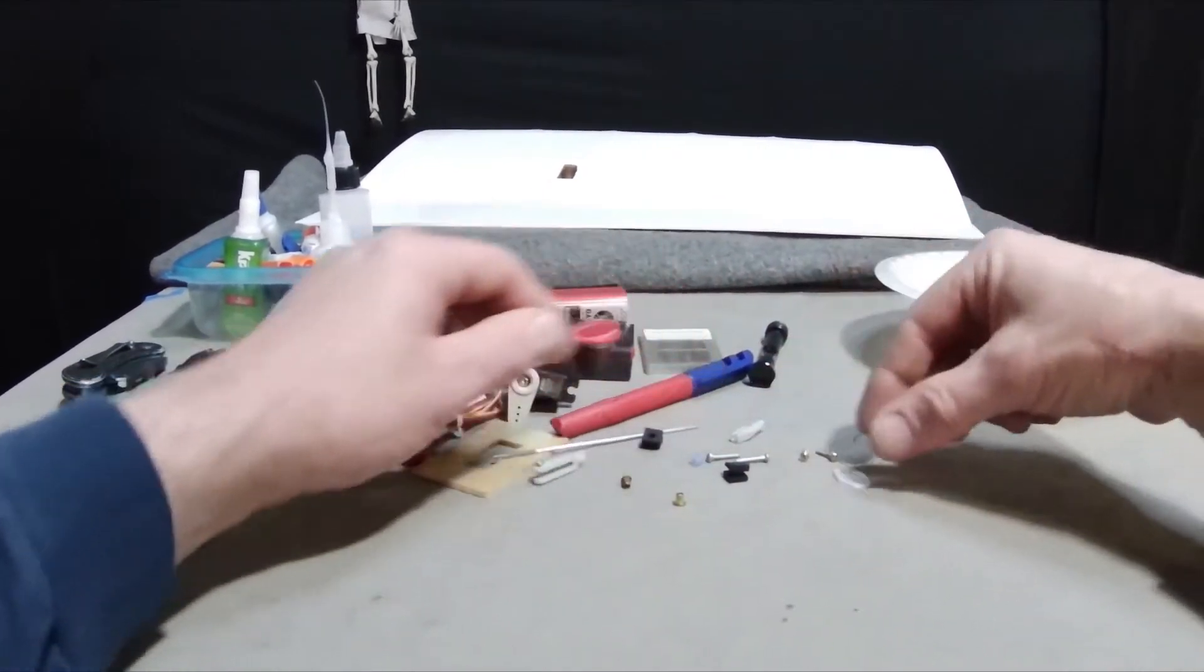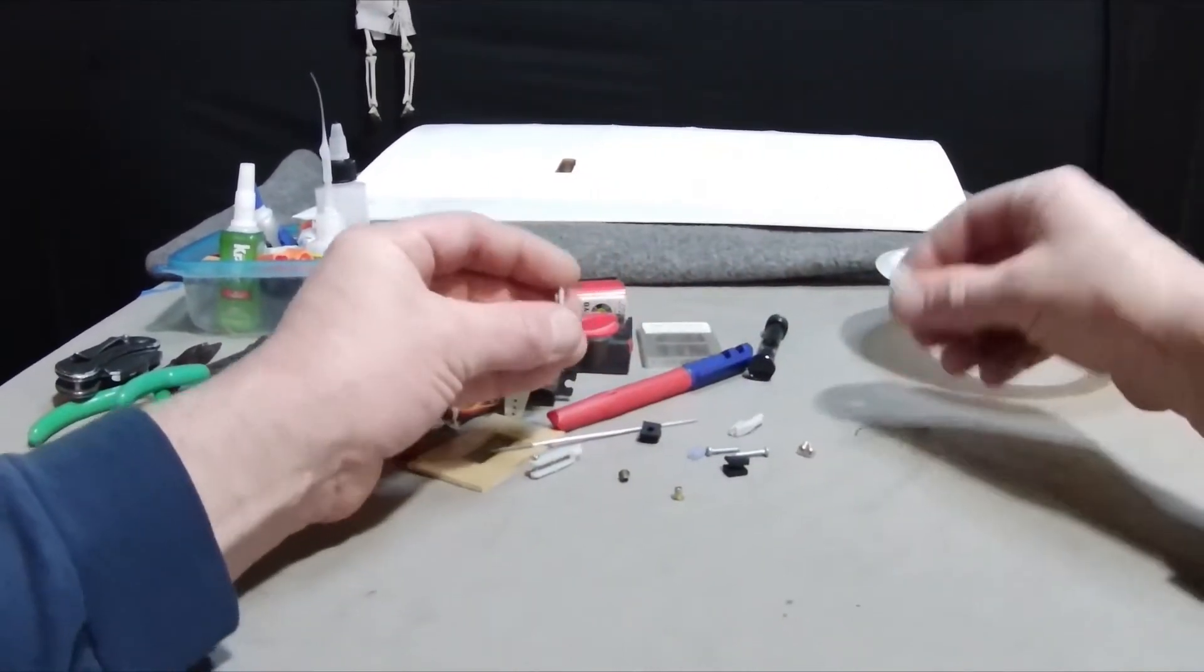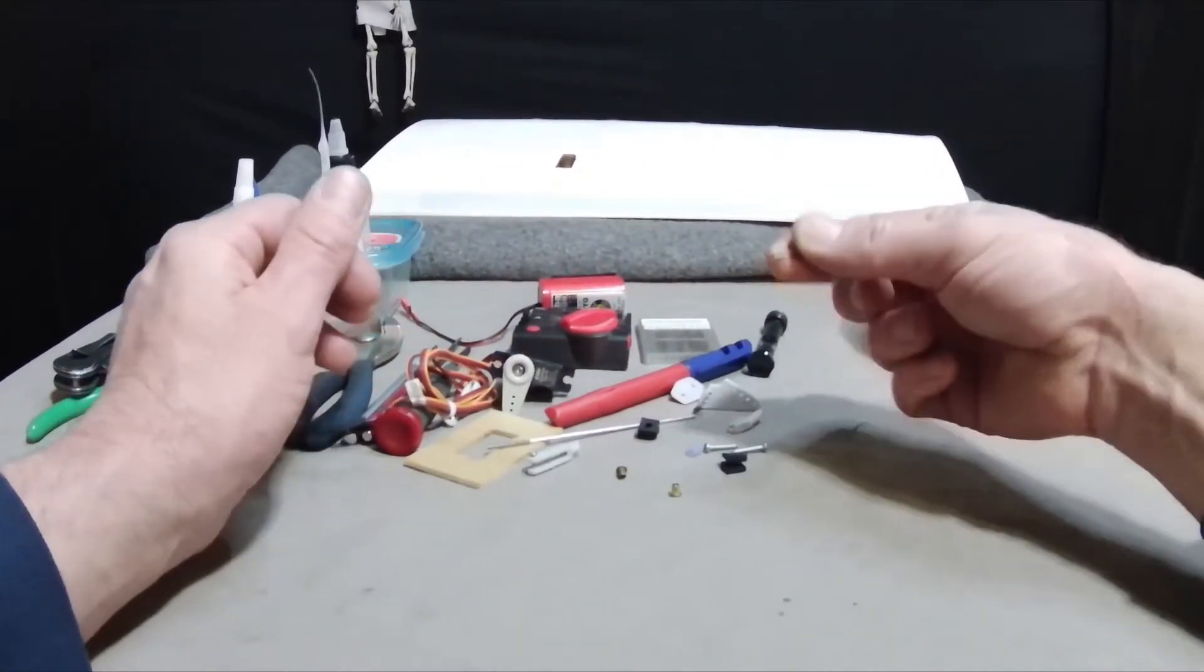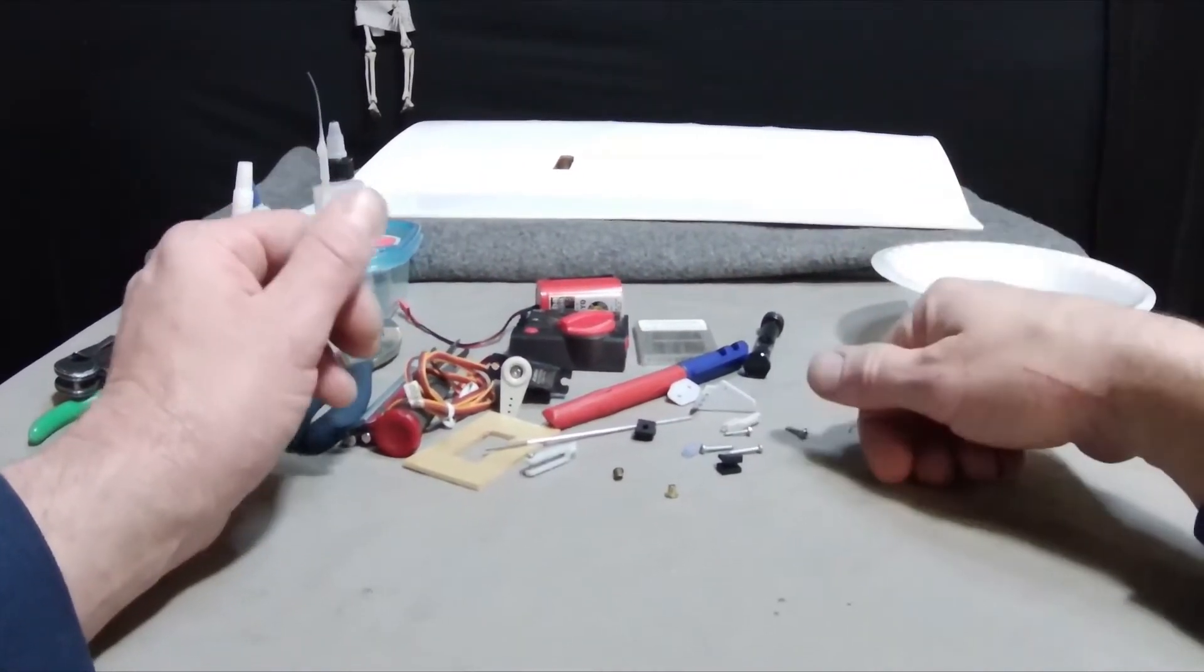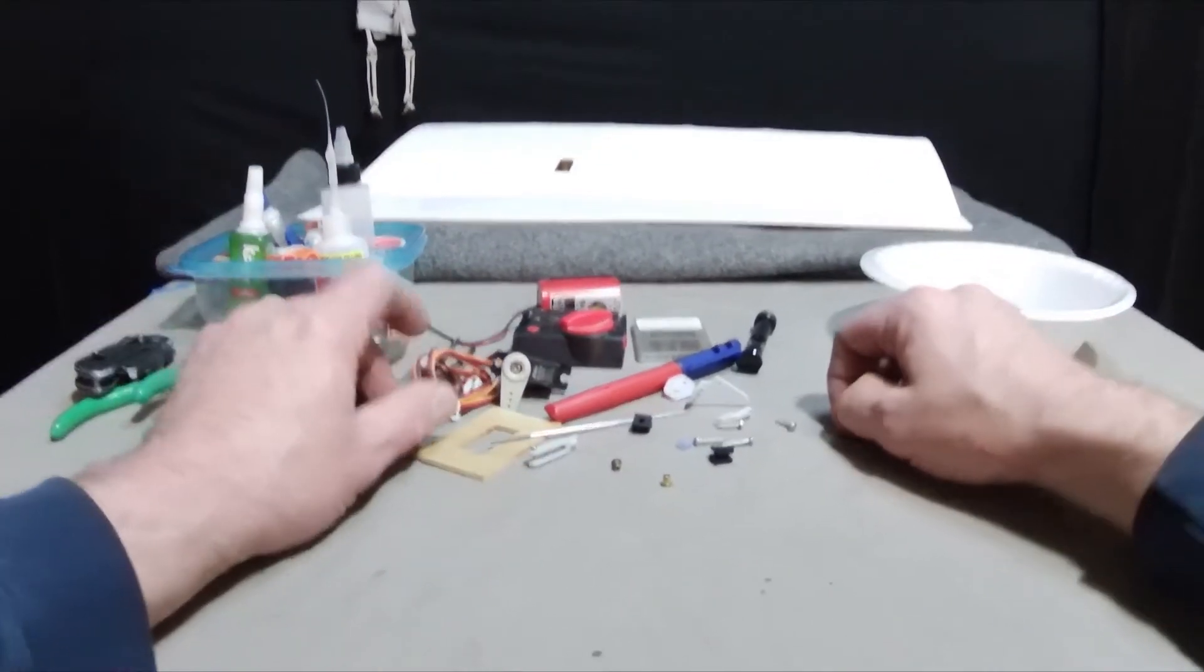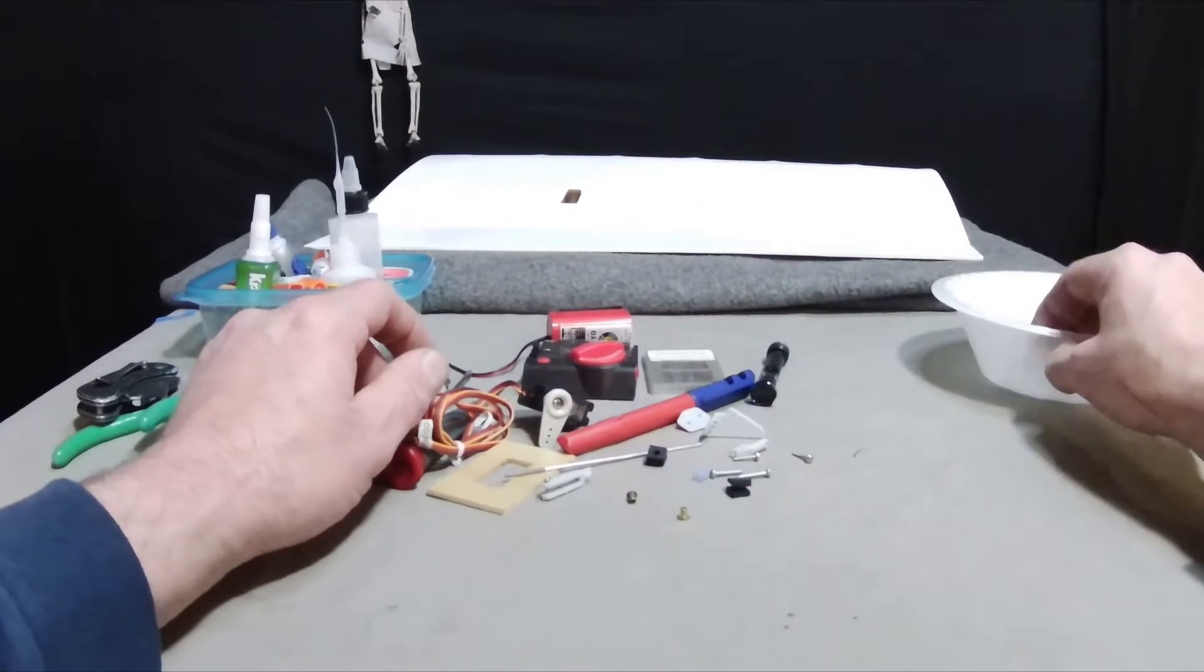Got a couple of rubber grommets and some brass eyelets that will go in the servo to help mount it. The kit came with two screws to mount this on the aileron, and then I got a couple more screws to mount the servo to the wood.